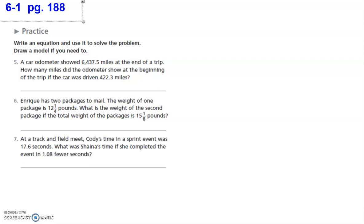Chapter 6 is all about equations — it's a lot of solving for the unknown. You'll see me use letters a lot, and I just want to remind you those letters are called variables and they basically just represent what you're trying to solve. For example, on number five, the directions say: write an equation, use it to solve the problem, draw a model if you need to. Sometimes I'll draw a model but other times I'll just start solving these problems.